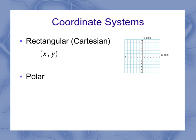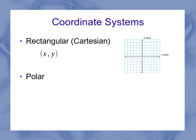In rectangular coordinate systems, we primarily used the coordinates x and y. In polar, we used r and theta.